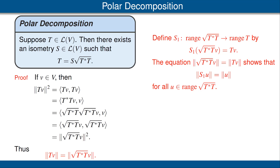Now define a linear map S1 from the range of the square root of T star T to the range of T by the equation shown here. There's actually a subtlety here — one needs to check that S1 is well defined. That follows from the equation highlighted in red at the bottom of the left column. Please see the book for details. That equation also shows that S1 is an isometry, meaning the norm of S1 of U equals the norm of U for all vectors U in the domain of S1. If the range of the square root of T star T is the whole vector space V, then we're done, because we can let S equal S1 — we have an isometry on V such that T is equal to S times the square root of T star T.